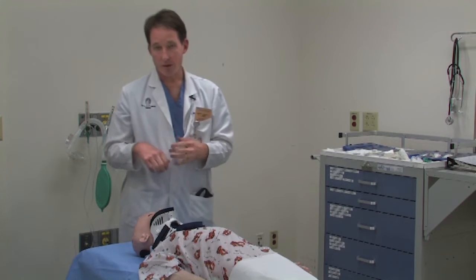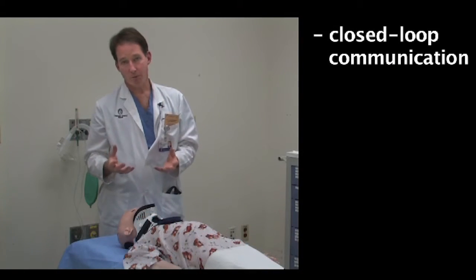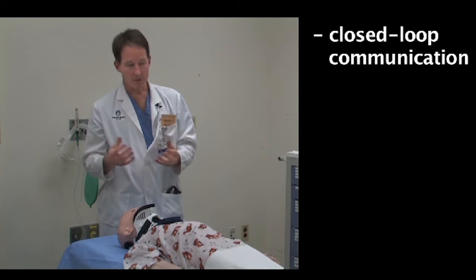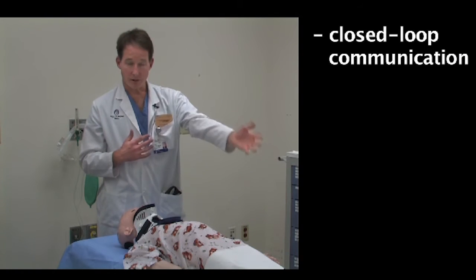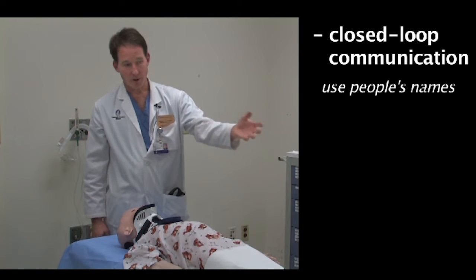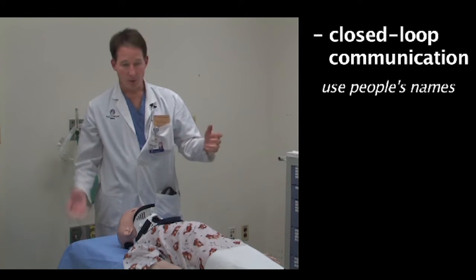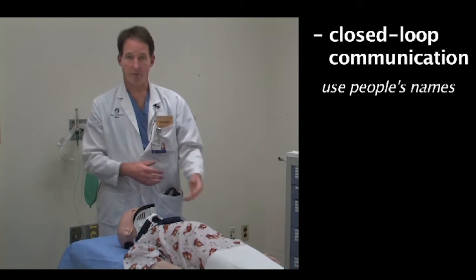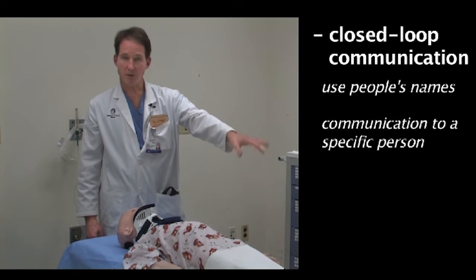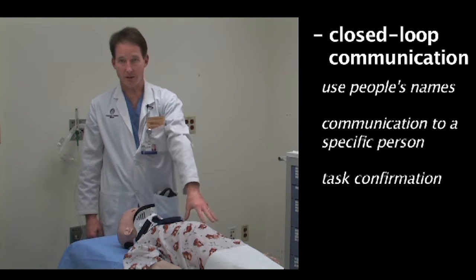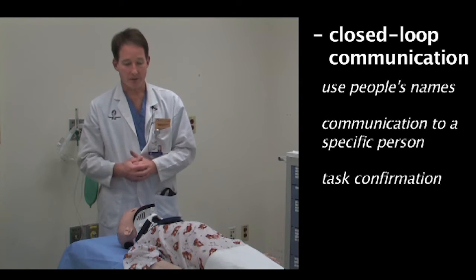The other thing that needs to happen in terms of general behavior is called closed loop communication. What that means is no one calls to the air, 'we need an IV.' They call to the person next to them: 'Mary or Bill, could you start an IV in the left arm?' Mary or Bill would say, 'yes, I'll start an IV.' The loop has been closed. The communication goes to a person, not up in the air. And then you have much more confidence that it actually is going to be done.